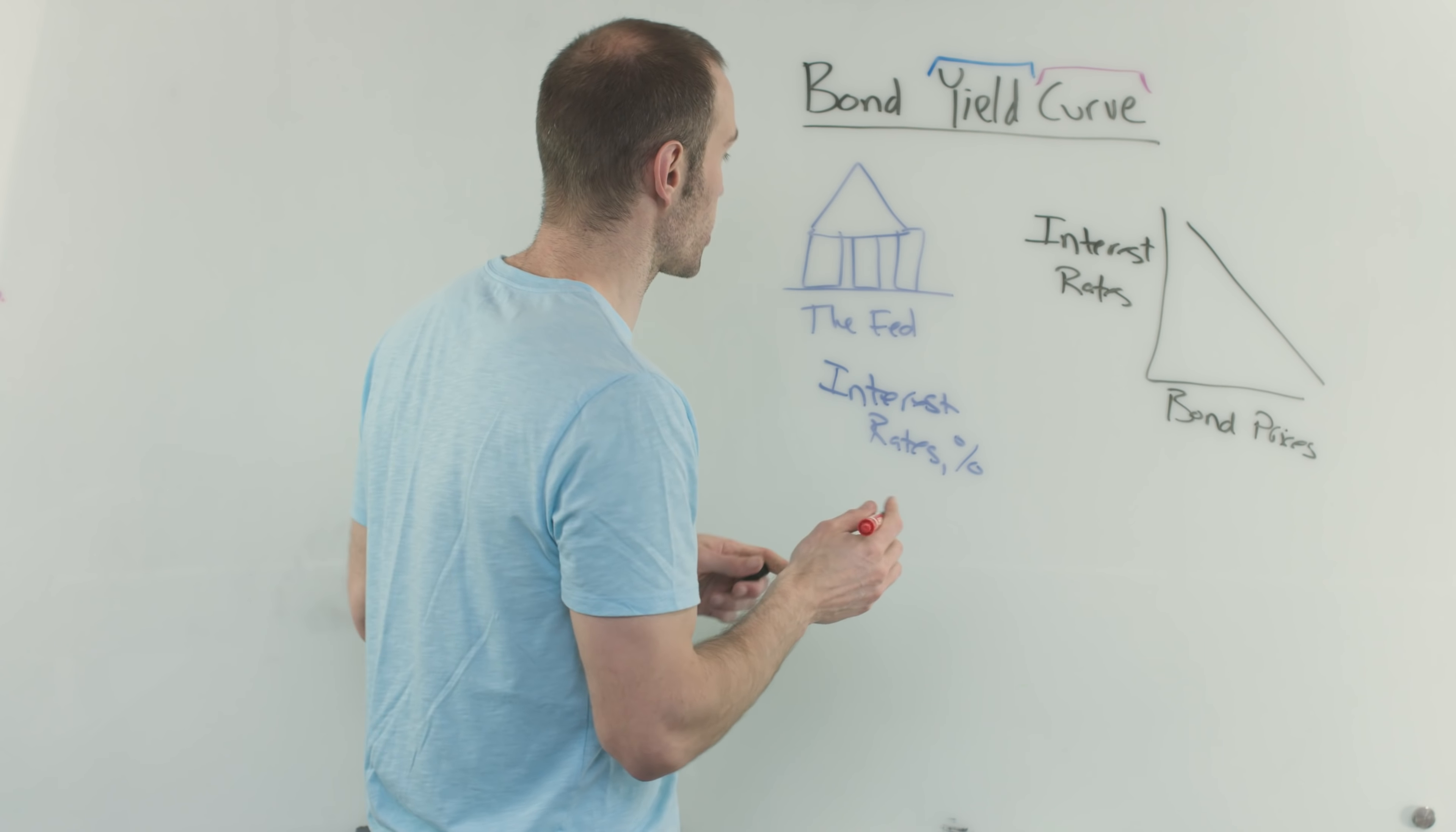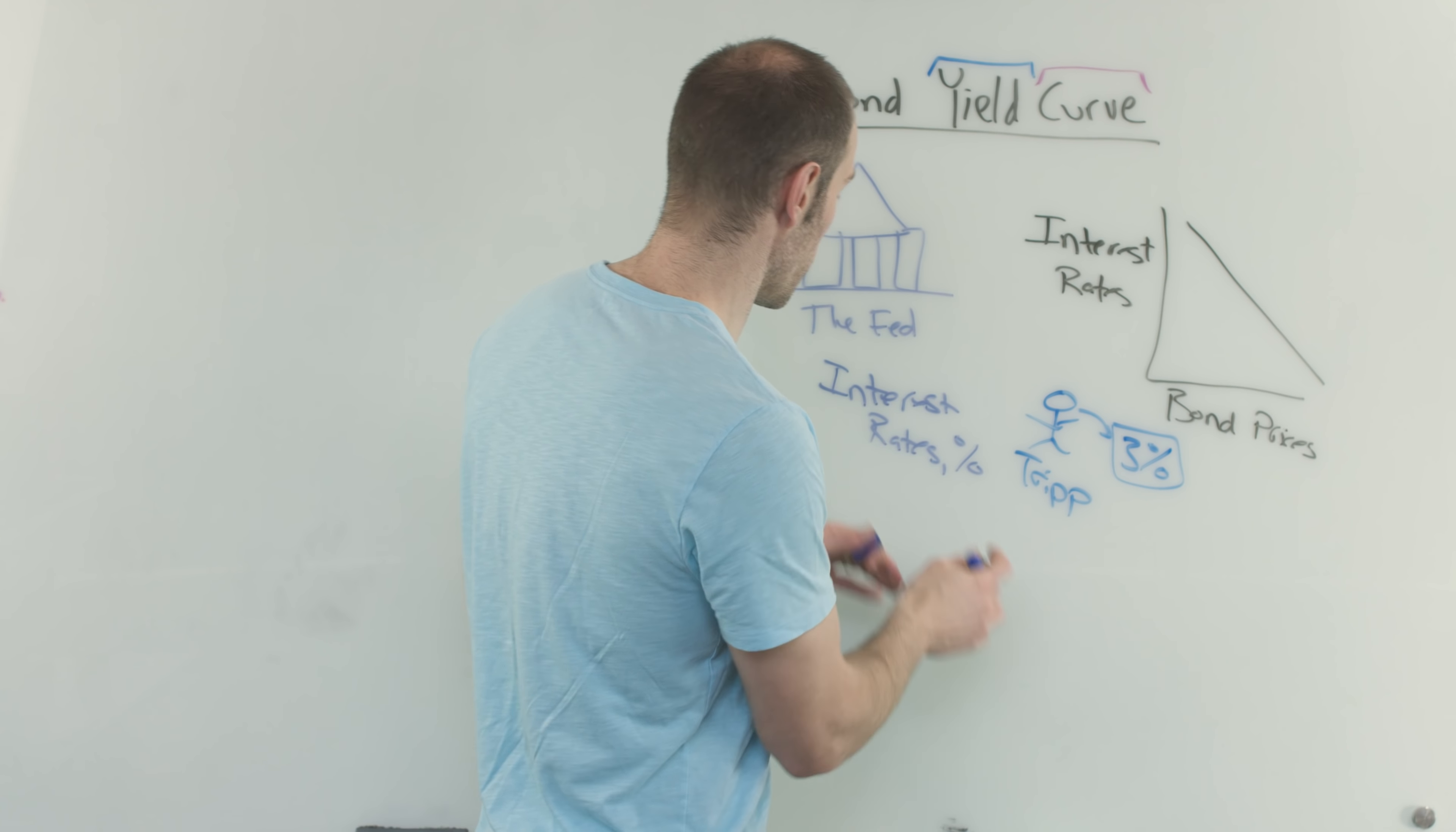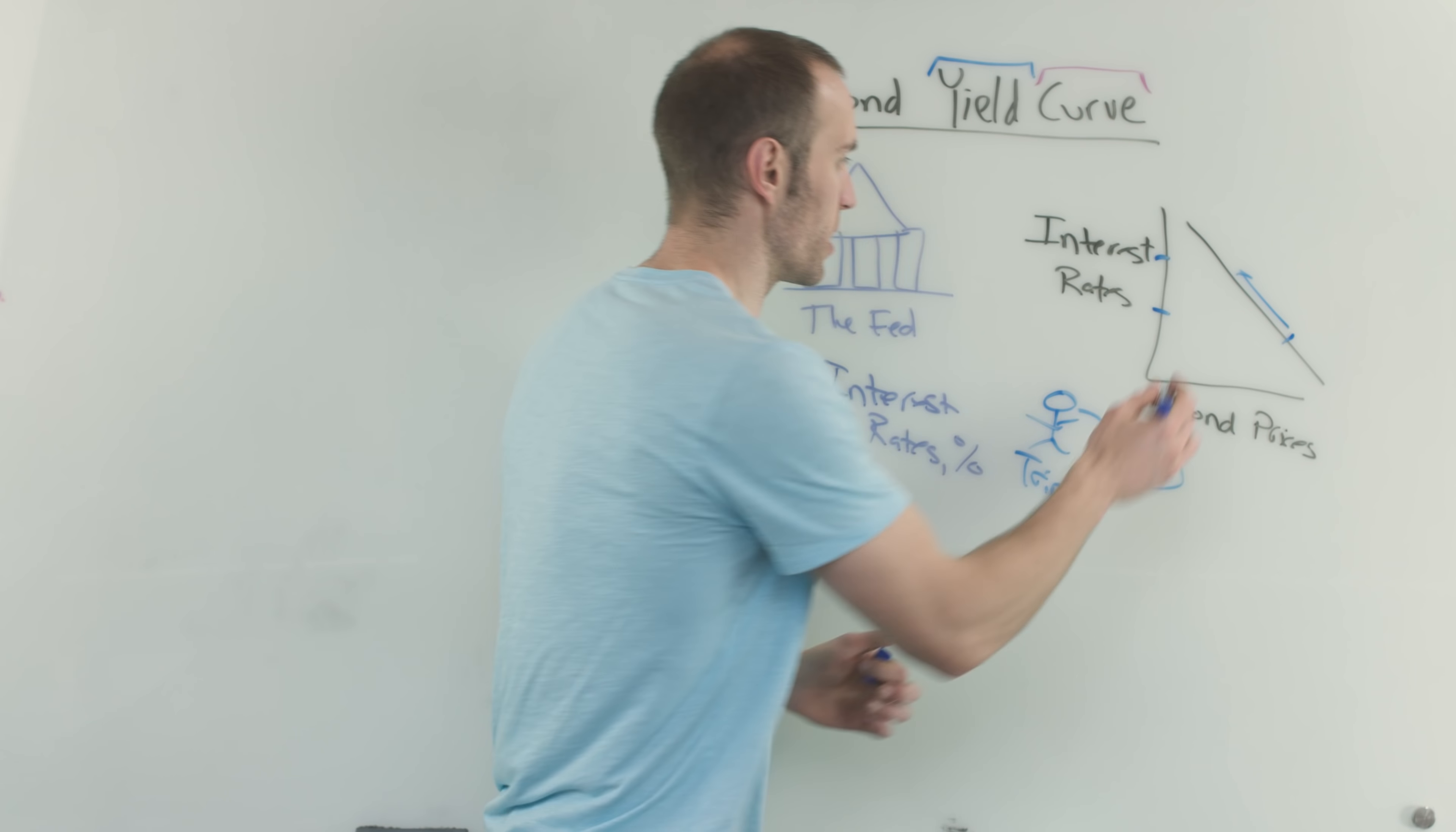So look at it like this. Let's say that we have Trip, and he's out there and he owns a bond that pays 3%. And then all of a sudden the Fed says, you know what, we're gonna raise interest rates. So interest rates are somewhere around here and we're gonna raise interest rates. So it goes from here up to here. Well, now all of a sudden that level is gonna change. What does that do? Why is that the case?